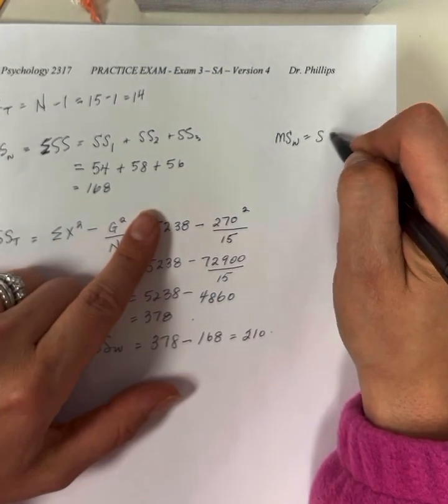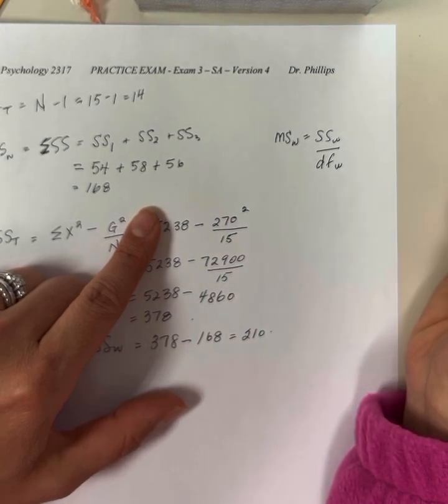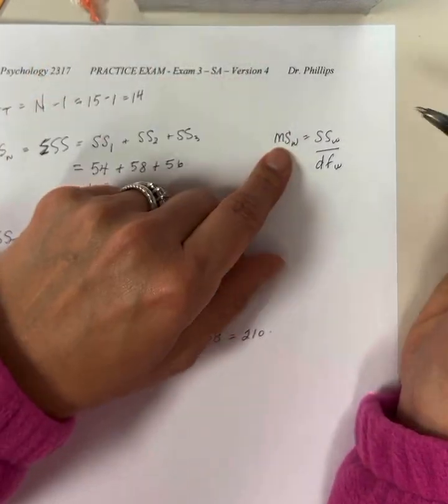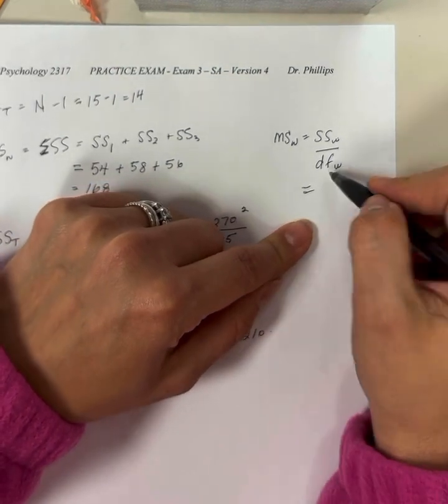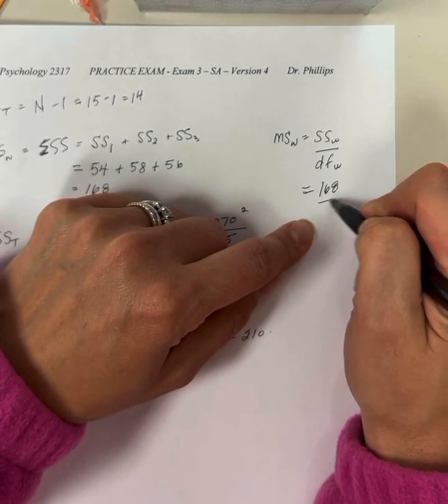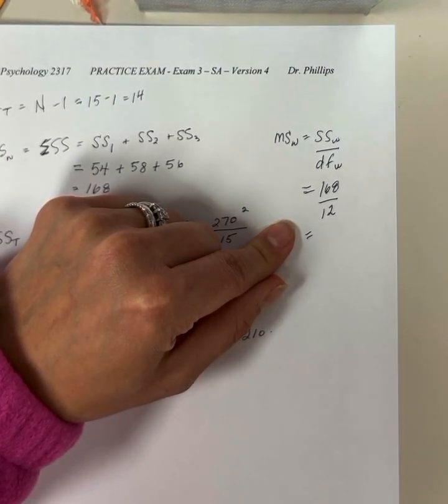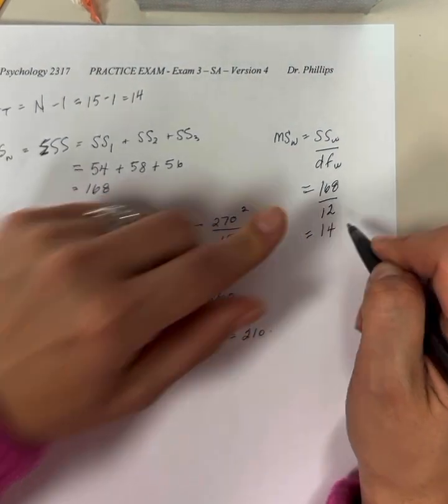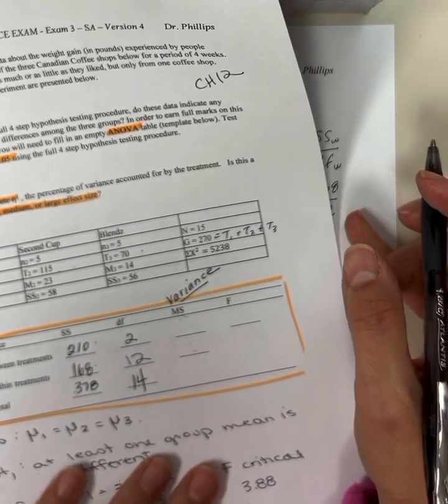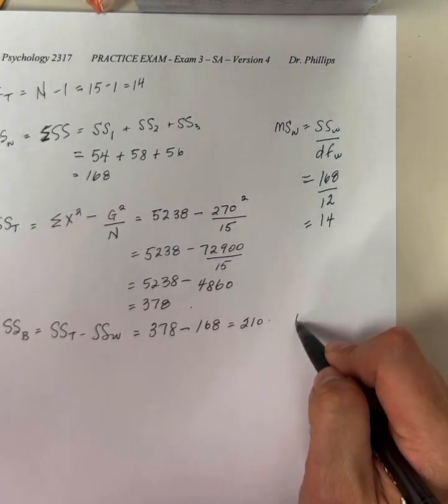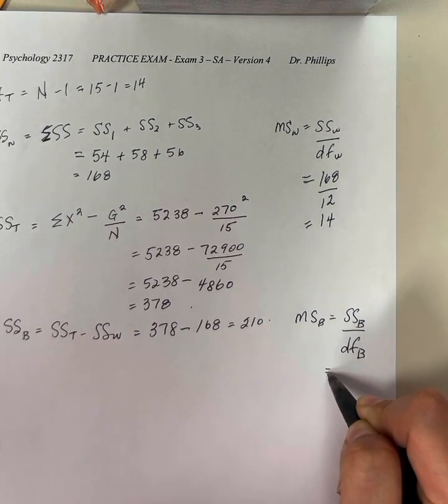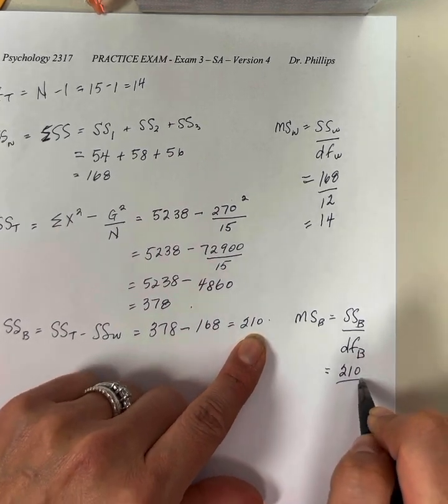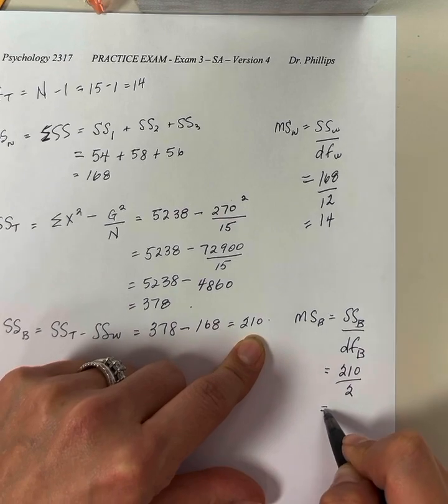I'm going to do it up here in the interest of trying to save some space. Mean square within is sum of squares within divided by degrees of freedom within. Because remember, that mean square is a form of variance, and variances are sum of squares divided by degrees of freedom. So I have 168 divided by 12, which is 14. Mean square between is sum of squares between divided by degrees of freedom between. Sum of squares between was 210. My degrees of freedom between was 2. So that is 105.